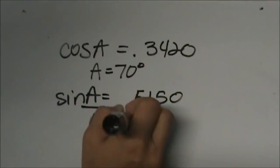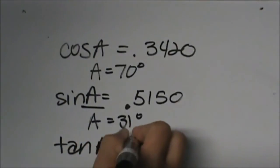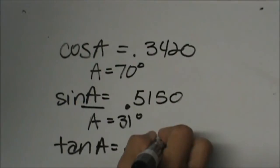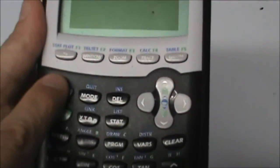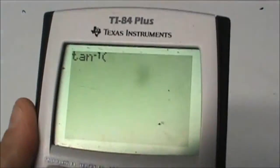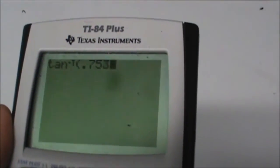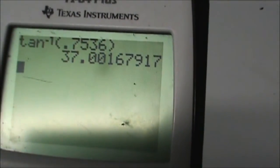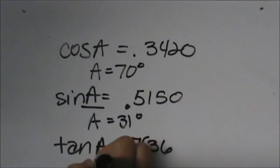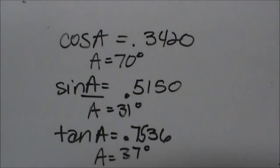So A is 31 degrees. Now let's try one with tangent — by now you should be getting the hang of it, so go ahead and try it if you want. I'm going to take the second function key and tangent, get tan to the negative 1 of 0.7536, close my bracket, and the degree measure is 37 degrees. So A is 37. That is how you actually work backwards to find those angles. Now let's put together how to use your trig functions.